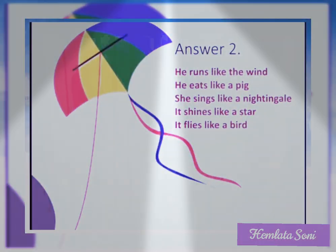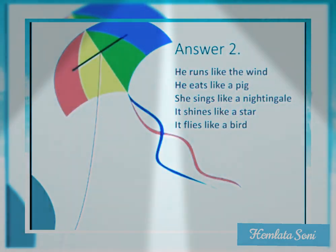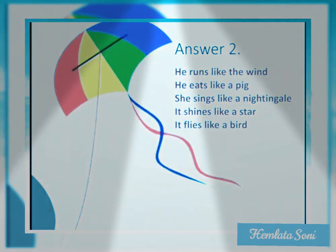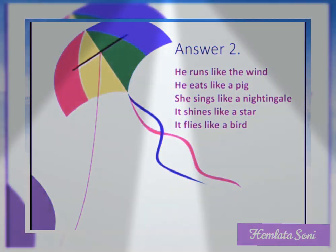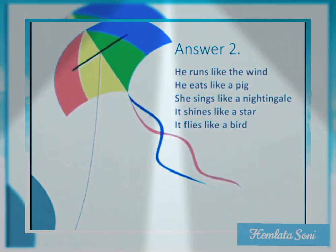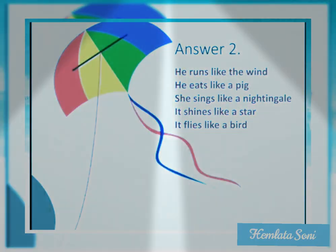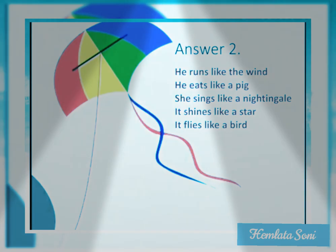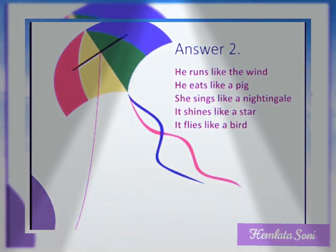For the simile exercise, the answers are: He runs like the wind. He eats like a pig. She sings like a nightingale. It shines like a star. It flies like a bird.